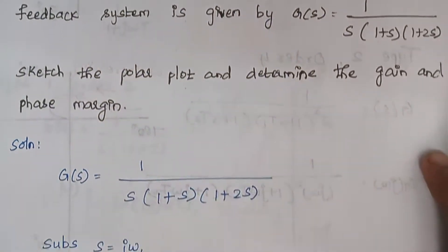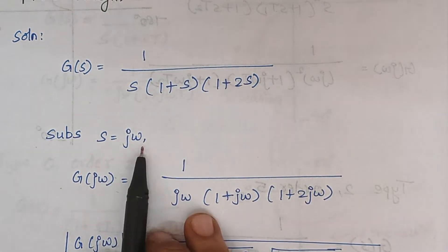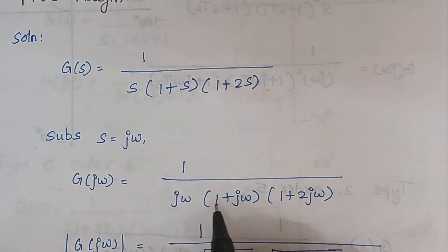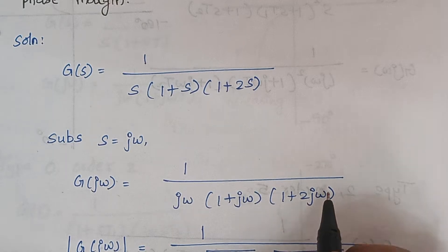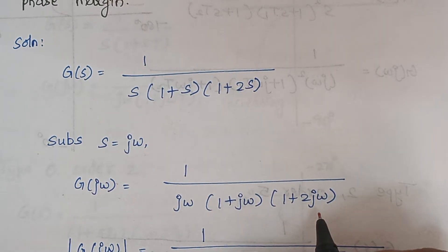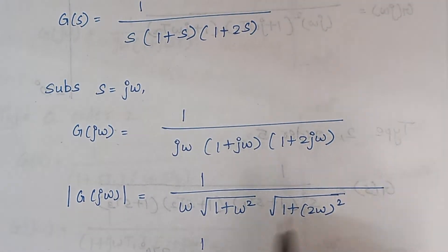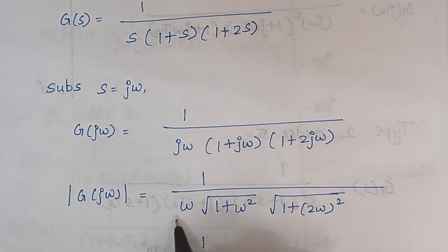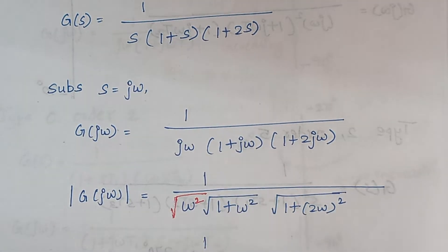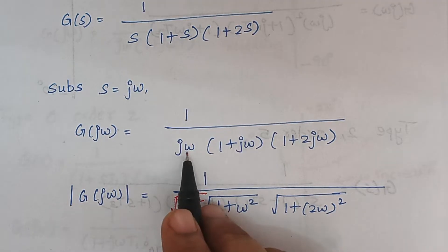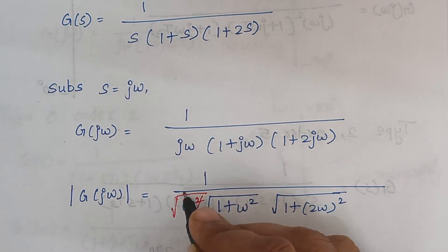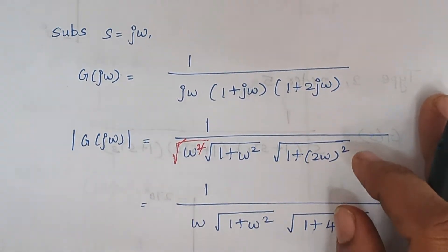The first step is we have to substitute S as jω. When you substitute in this expression, it gets modified as 1 by jω, 1 plus jω into 1 plus 2jω. We need to calculate a magnitude expression and a phase angle expression. jω should be written as square root of ω squared, and the square root and square cancel each other, finally giving us ω.